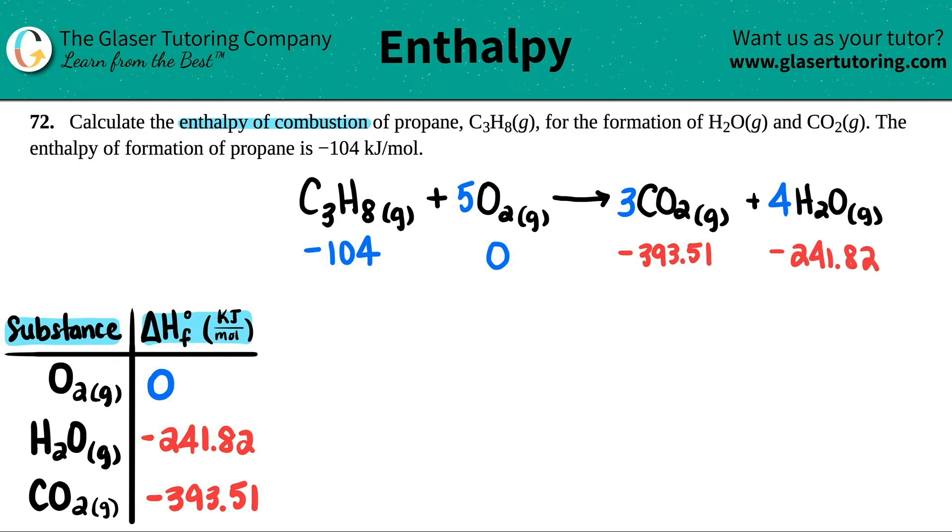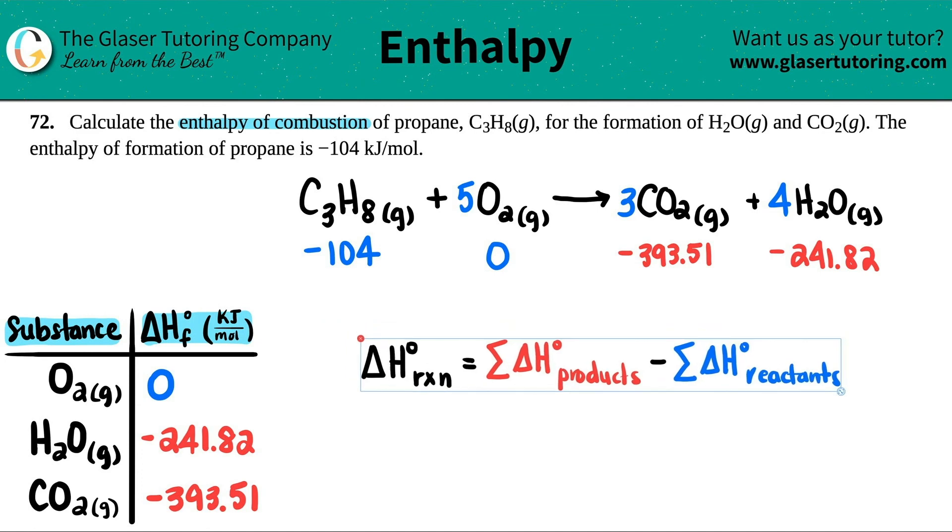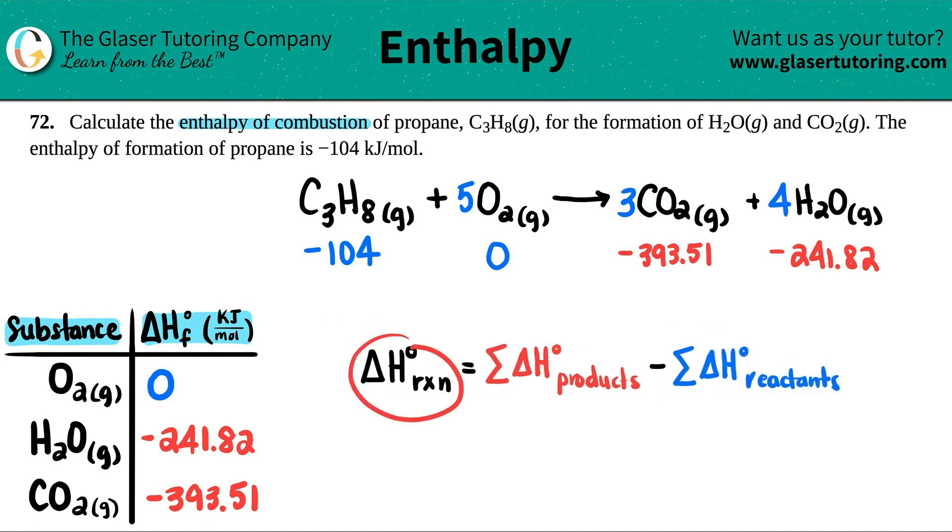So now how do we find out the enthalpy of the whole equation, which is a combustion equation? This is a pretty easy formula. Basically, in order to find a delta H for a whole reaction, RXN just means reaction, we have to take the sum - this little symbol just means sum - the sum of all the delta H's of the products minus the sum of all the delta H's of the reactants. Basically, I need one number for my reactant side and I need one number for my product side.